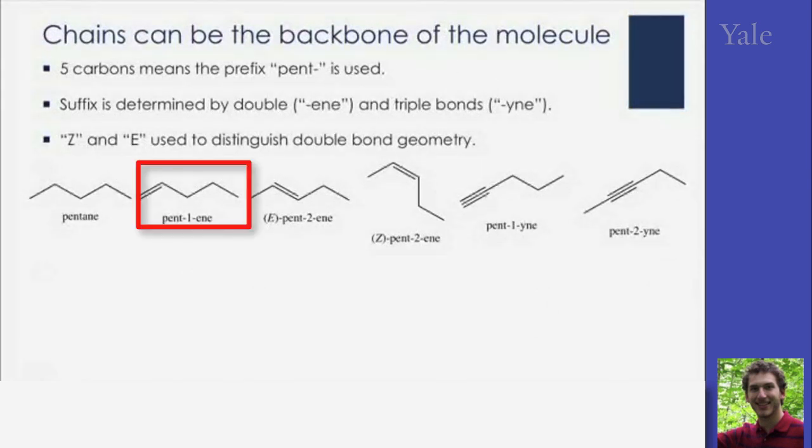If we move over, we see one double bond, pent-ene. Now if there were two double bonds, this would be pentadiene. Or you could have triene, tetraene, pentaene, etc.